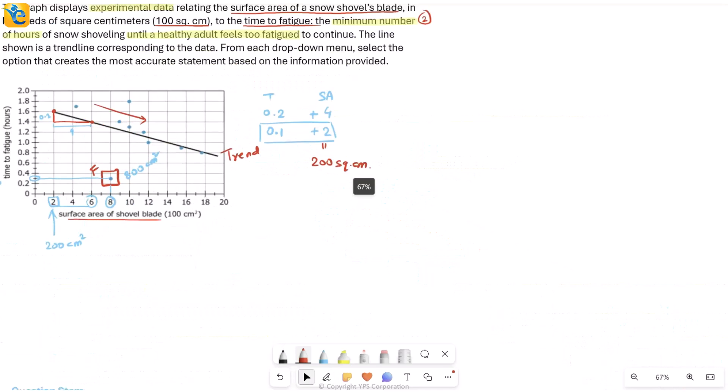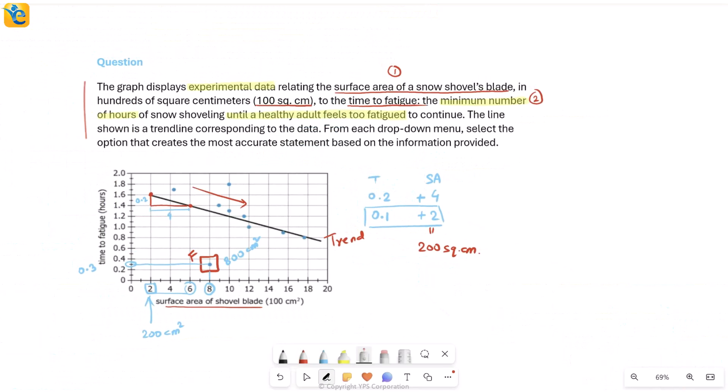Let's understand how we solved this question. First, by clearly understanding everything given here, we even took an example to make sure we get it. This was where we really owned the data set. Then when we went into the first statement, it simply talked about the farthest data point, so we just needed to visualize which one that was and read it. When we went into the second question, it talked about a specific decrease—what if time decreases by 0.1, what happens to surface area?